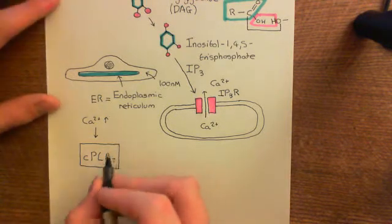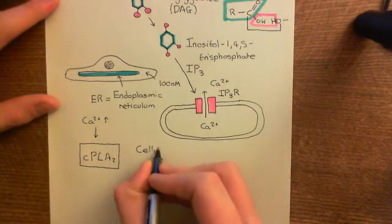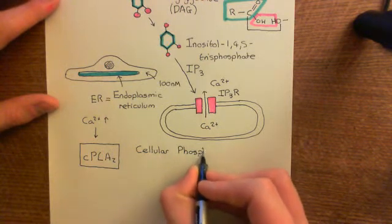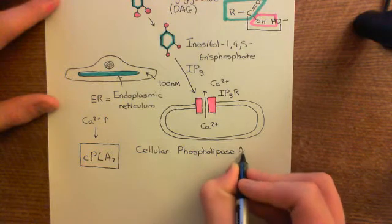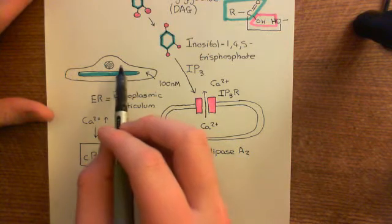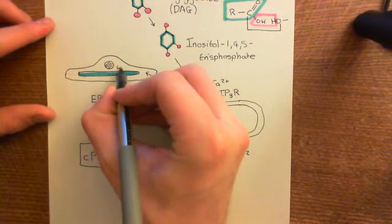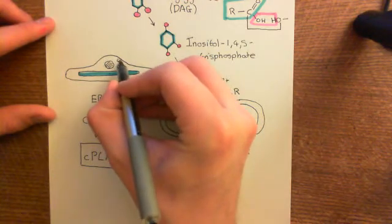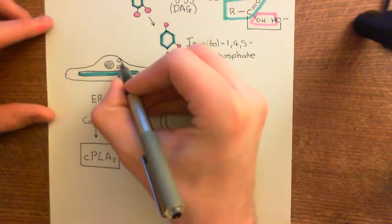Calcium is going to bind to this cellular phospholipase A2, and when calcium binds to it, what happens is that the enzyme goes from being within the cytoplasm of the cell and translocates to the inner leaflet of the phospholipid bilayer. It migrates to the underside of the cell membrane.